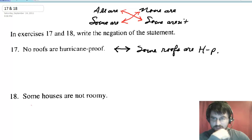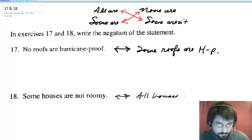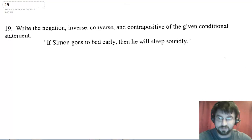So down here, some houses are not. The opposite of some are not is not that some are. The opposite of some are not is all are. All houses are roomy. Alright. And that brings us to number 19.